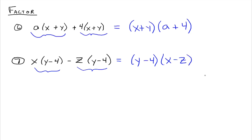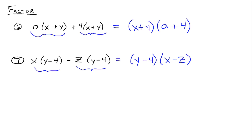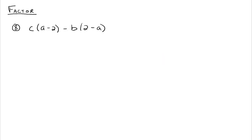The point is that the greatest common factor does not necessarily have to be a monomial. For example 8, we have c times a minus 2, minus b times 2 minus a. At first glance we say there's nothing in common, because a minus 2 and 2 minus a are not the same thing.